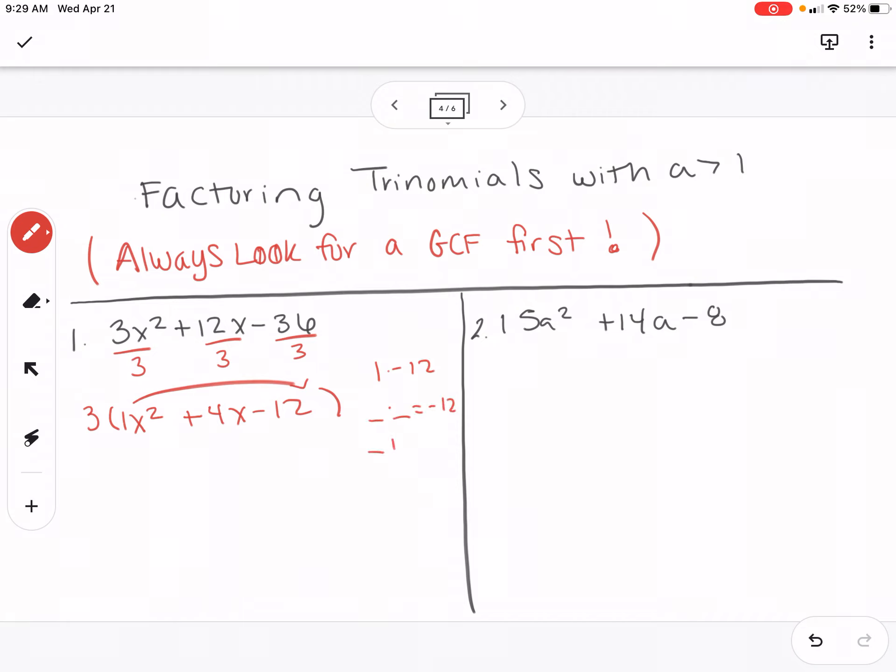So that's going to be my first one. And then my middle number goes on the bottom. So I'll make a list of numbers that multiplies to 12. I want to see which one gives me 4. That would be 2 and 6.